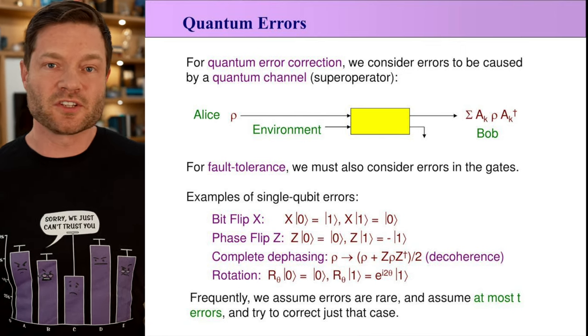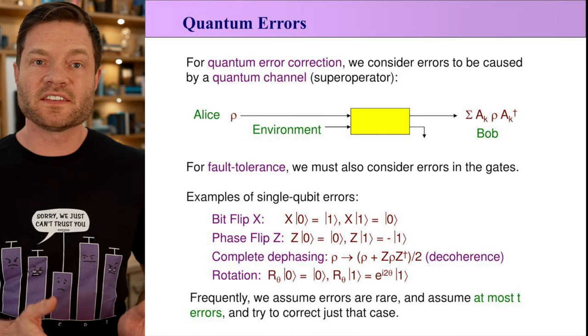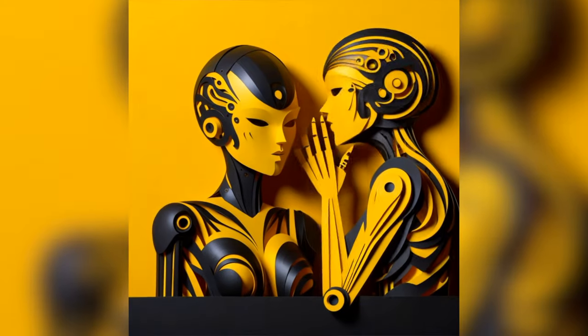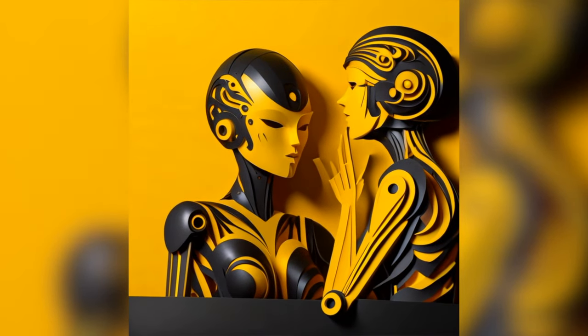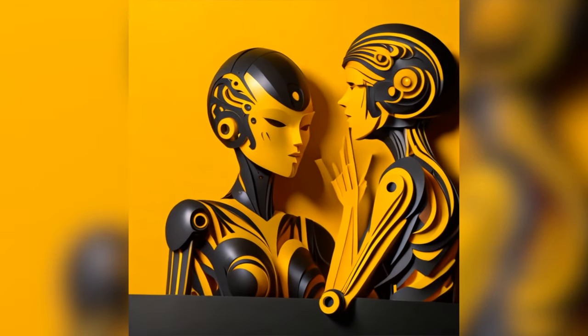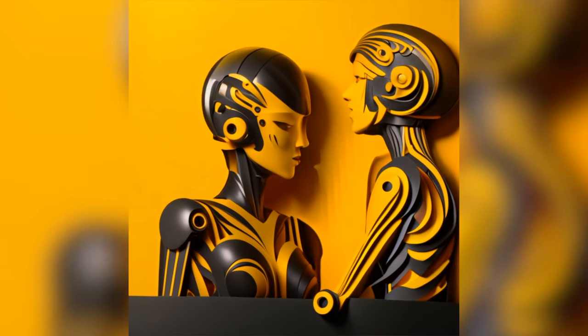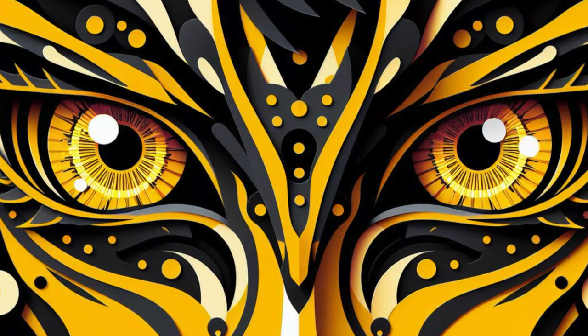You can think about it like a quantum spell checker that keeps quantum computers on track. To understand error correction, let's go through an example. Imagine you're playing the game of telephone: you start with a message, whisper it to a neighbor, they whisper it to another neighbor, and down the chain the message goes. Because of small differences in how people hear, perceive, and repeat things, by the time it gets to the end of the chain, the message is nothing like it was at the beginning.